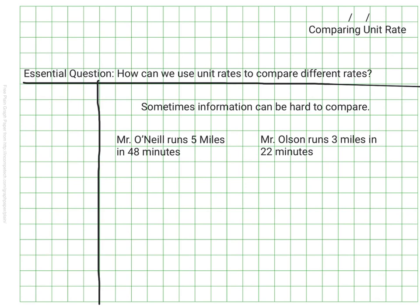If I wanted to know who was faster, it could be a little bit tricky. After all, Mr. Olson didn't spend as much time running, but he also didn't run quite as far as Mr. O'Neill, who was able to go five miles instead of three.